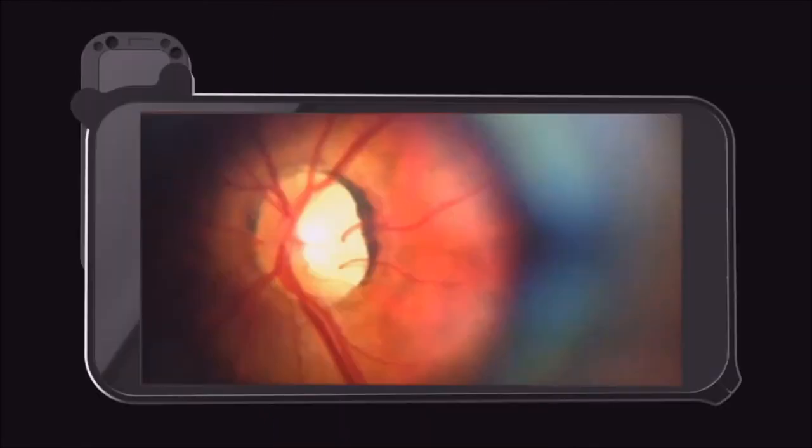When you see the red reflex from the eye, the DI has been correctly aligned and focused. To view the right eye, hold the camera vertically. For the left eye, hold the camera horizontally so the patient's nose will not block your attempt to get the lens as close as possible. On the screen, all you should see is the outer edge of the iris and the pupil. You should see a red glow.